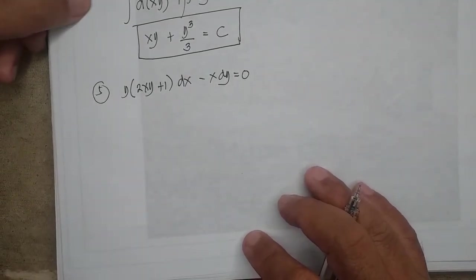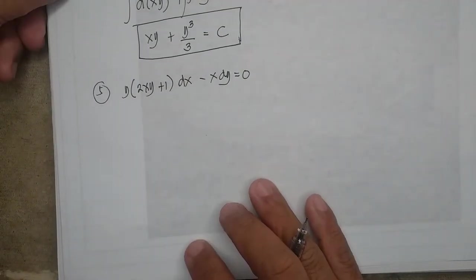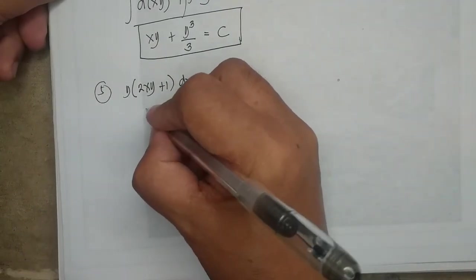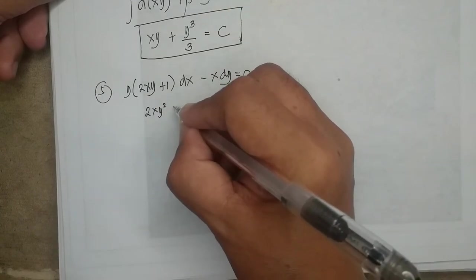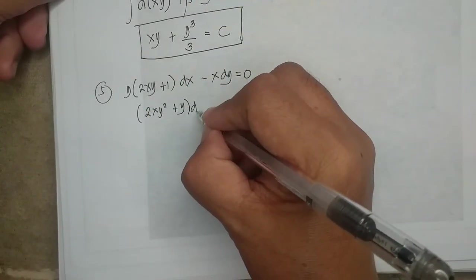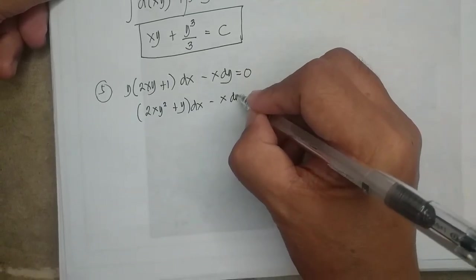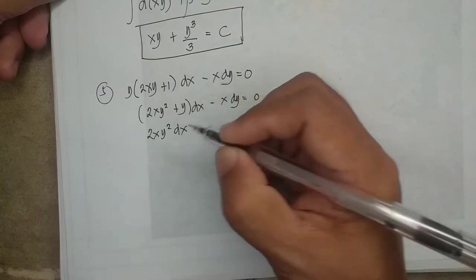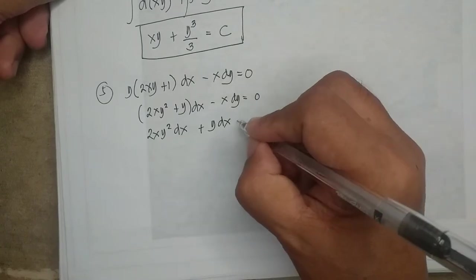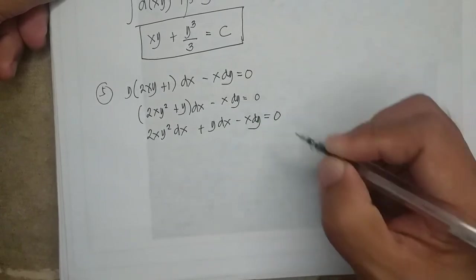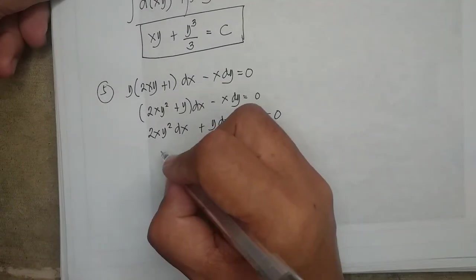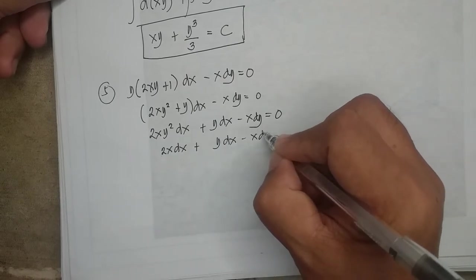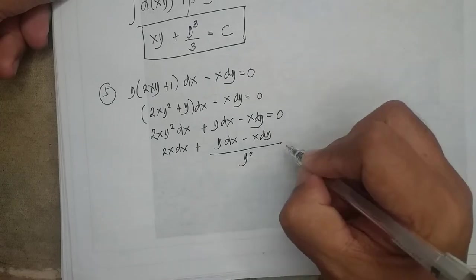As done in example number four, we manipulate this equation to fit any of the seven formulas. Distributing inside the parentheses, we have 2xy dx + y dx minus x dy = 0. Then dividing everything by y squared, we have 2x dx plus (y dx minus x dy) over y squared = 0.